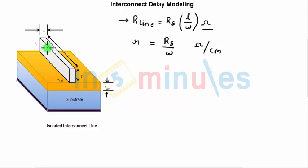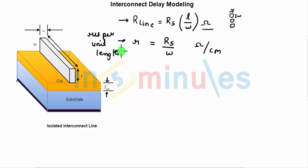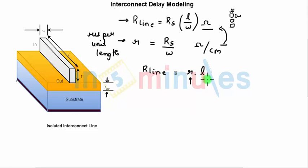R_line from input to output is given by sheet resistance into L/W, where L/W is the number of squares with dimensions W by W. Resistance per unit length is sheet resistance divided by W. Substituting, R_line equals small r into L — resistance per unit length times length — so R_line also has units of ohms. This shows there will be an increase in R_line if there is an increase in the interconnect length.